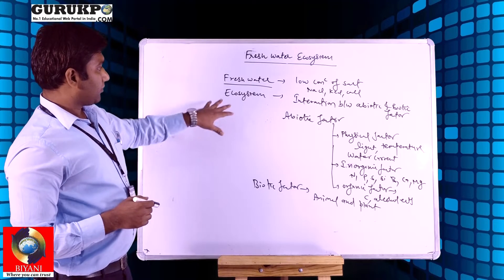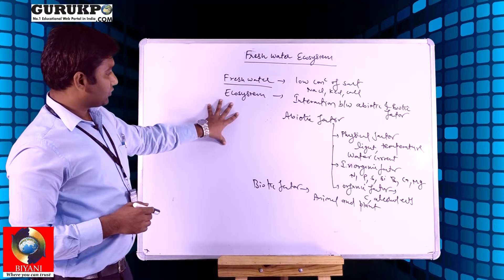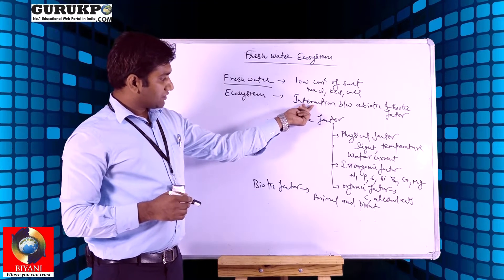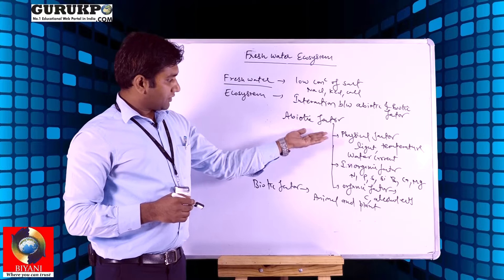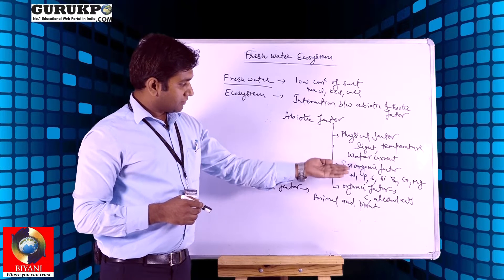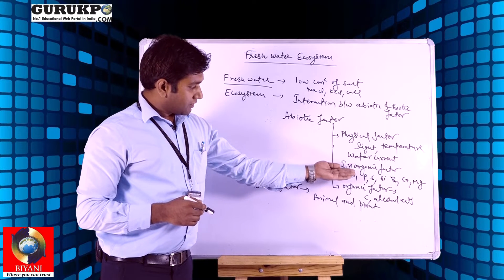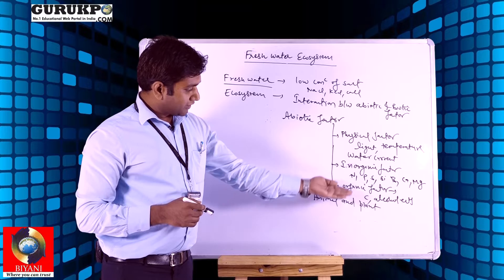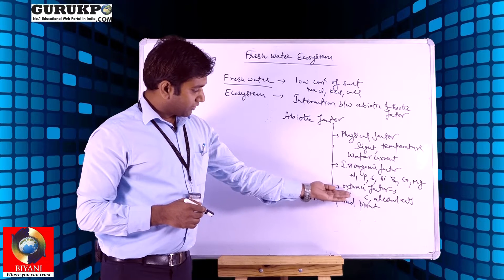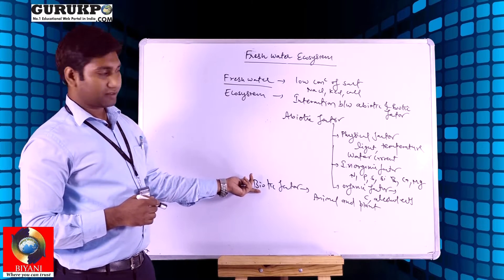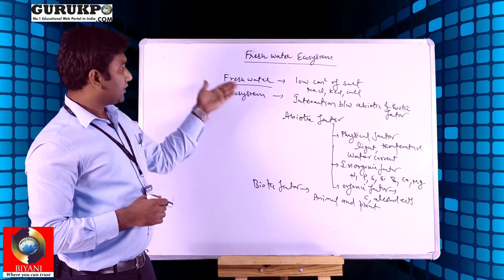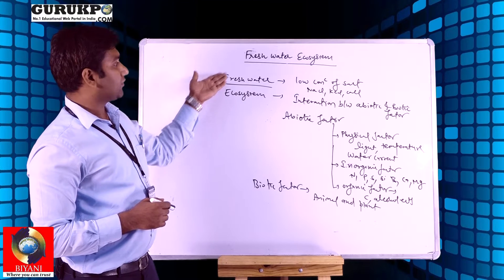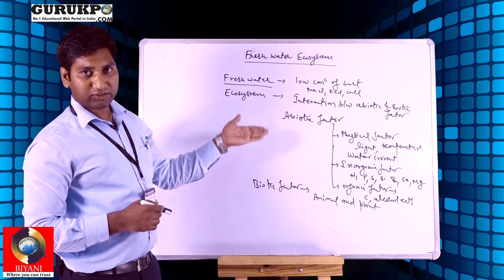So the freshwater ecosystem is the interaction between abiotic factors — physical, inorganic, and organic — and biotic factors occurring in fresh water. That is called the freshwater ecosystem.